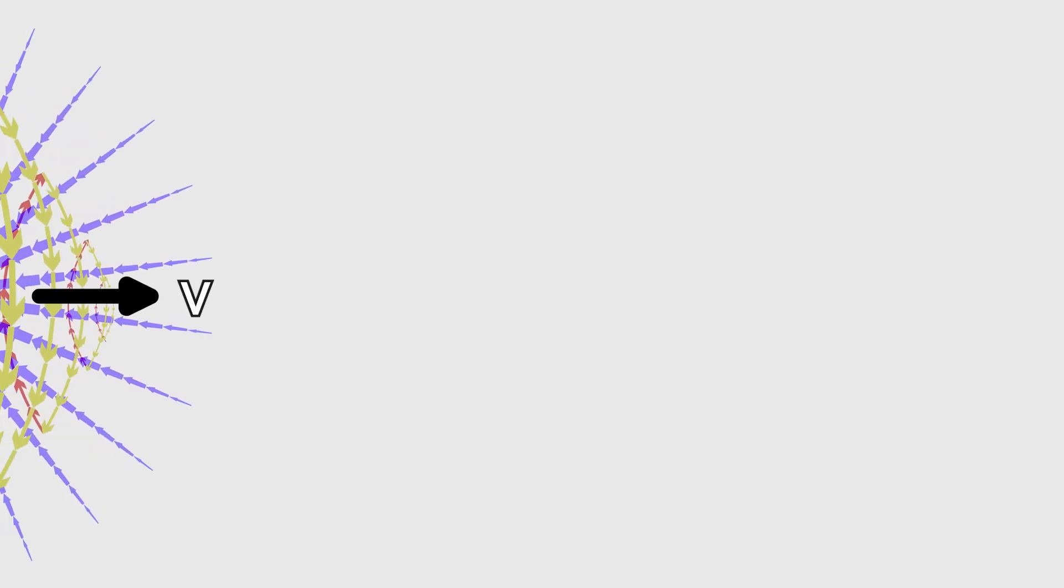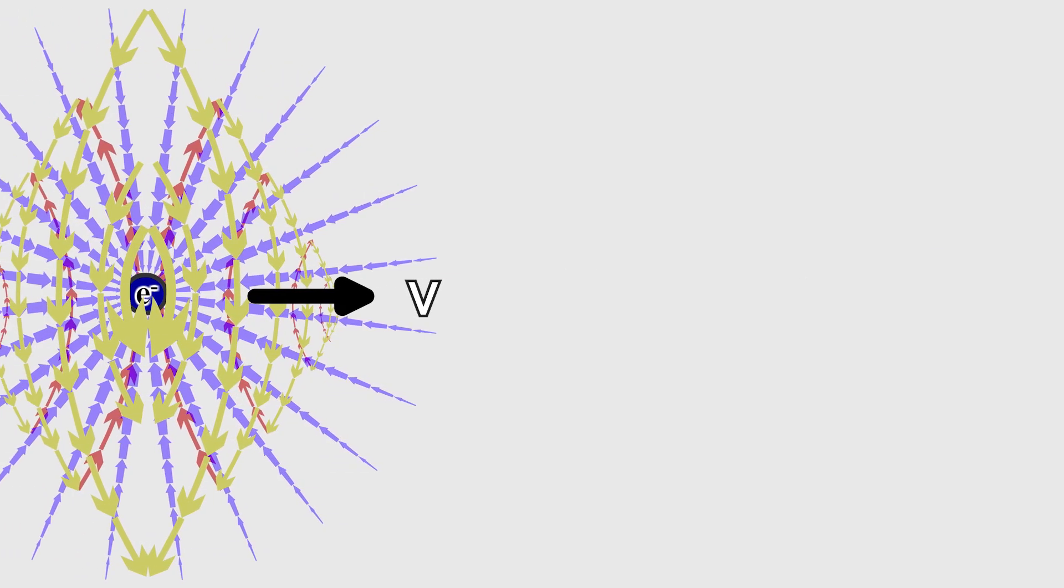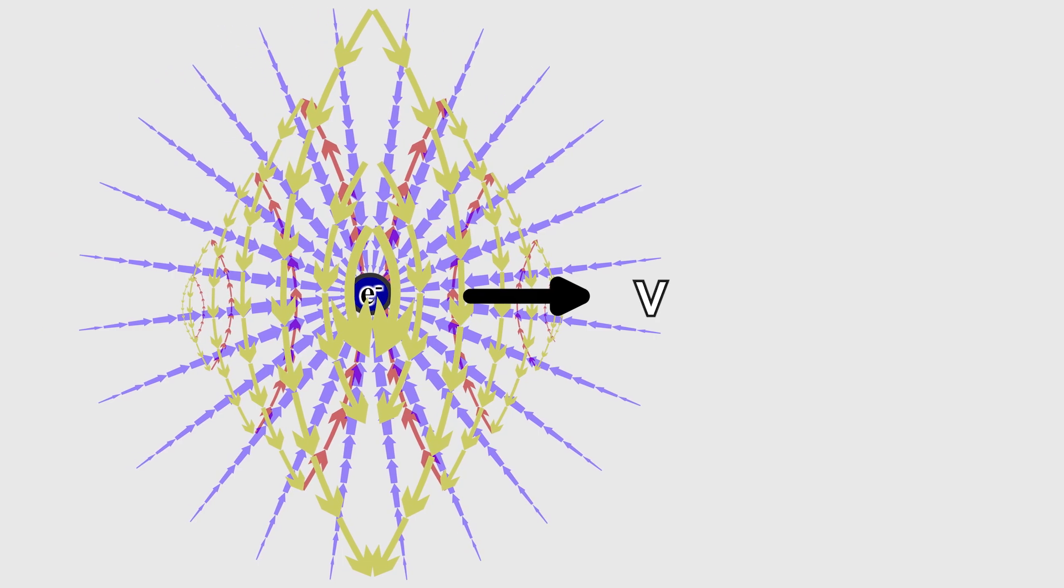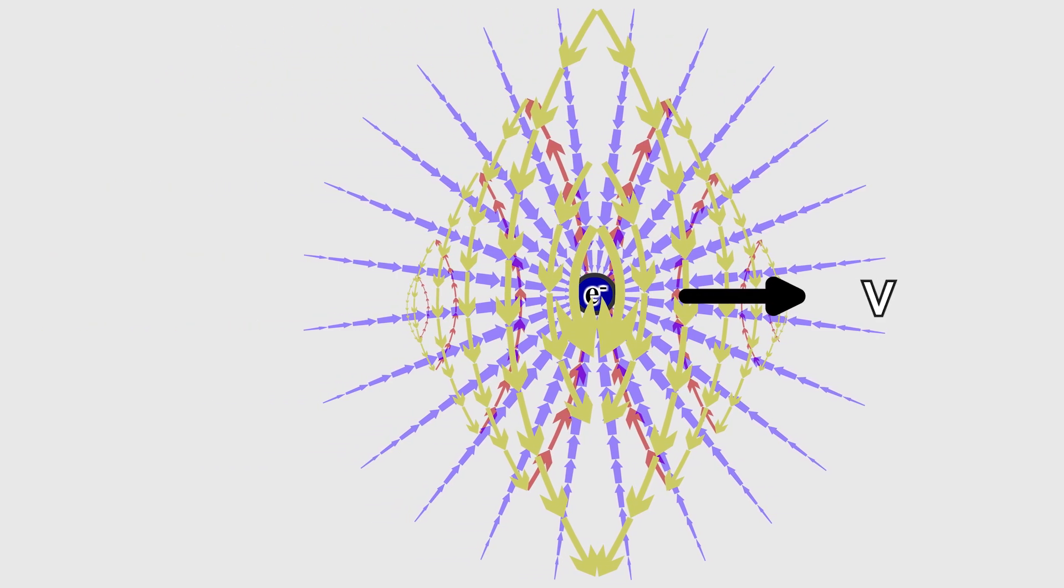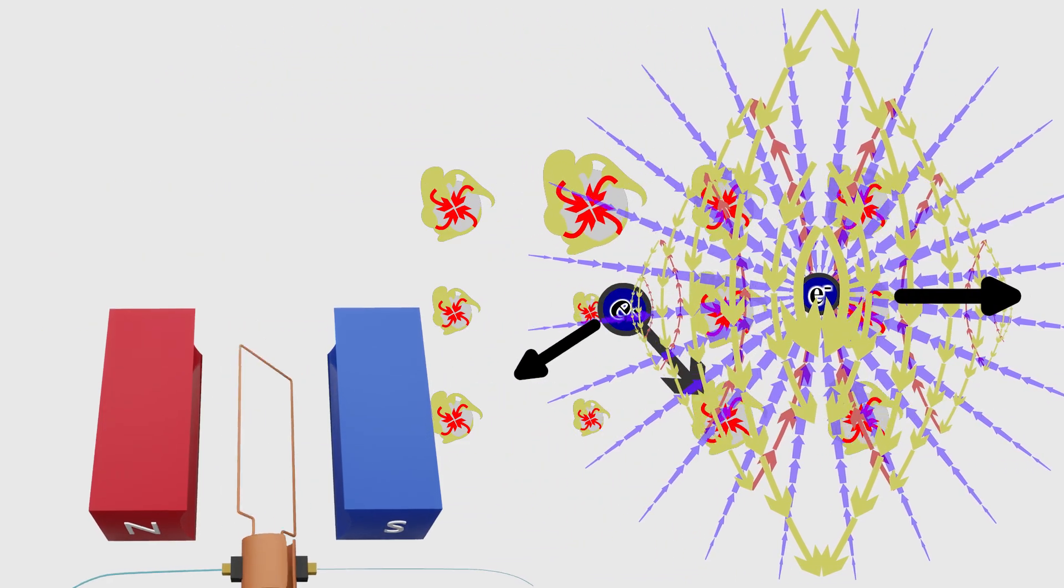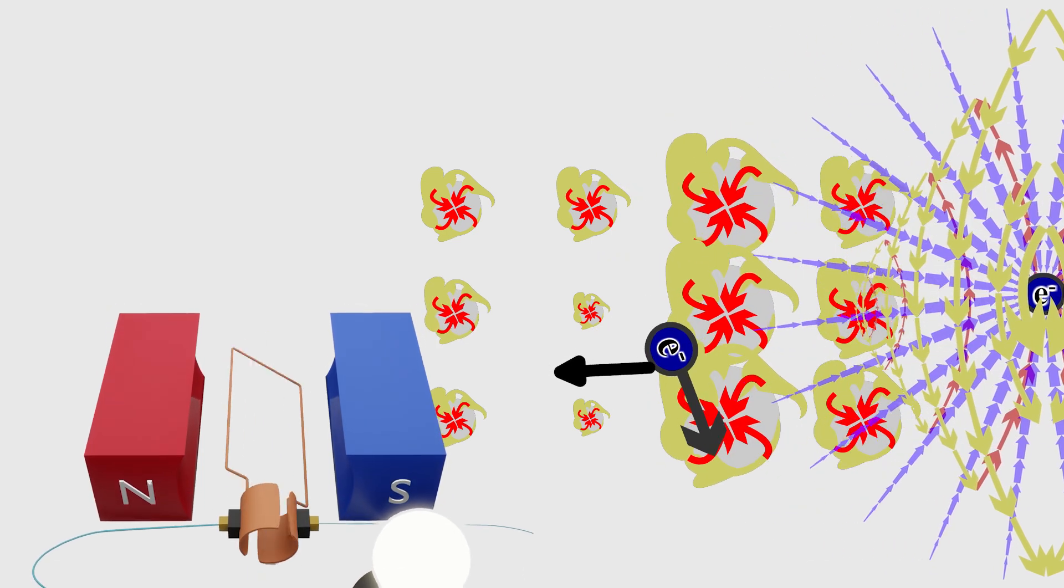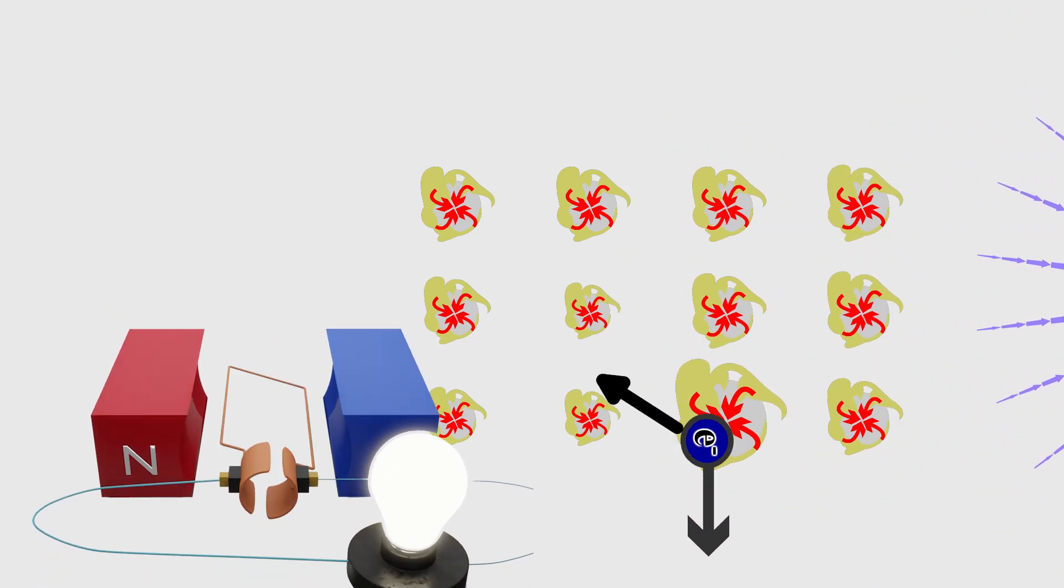Finally, a moving charged particle generates a magnetic field around itself, and this field interacts with an external magnetic field, resulting in torque and force effects on the particle. This principle forms the basis of electric motors,